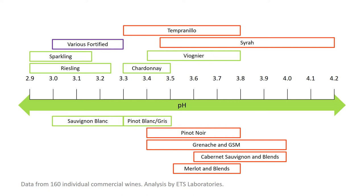Pinot Gris and Pinot Blanc — take this with a grain of salt since I don't have many in my database. The ones I had were Northern Italian and wines of Alsace. I learned at one of my seminars that the people of Alsace don't like you to say 'Alsatian' because it makes them sound like dogs. So: wines of Alsace. They had a pretty narrow range of 3.3 to 3.5, but again, take that with a grain of salt given the limited sample size.